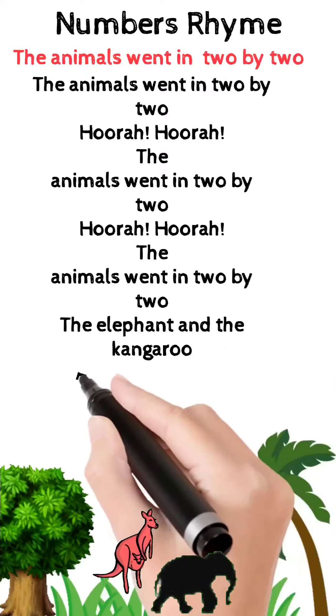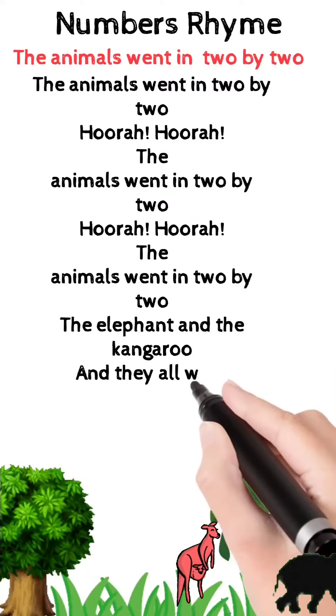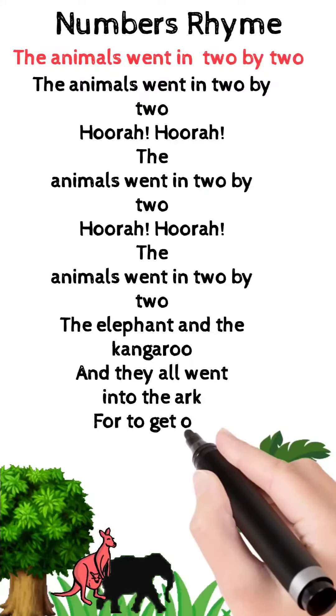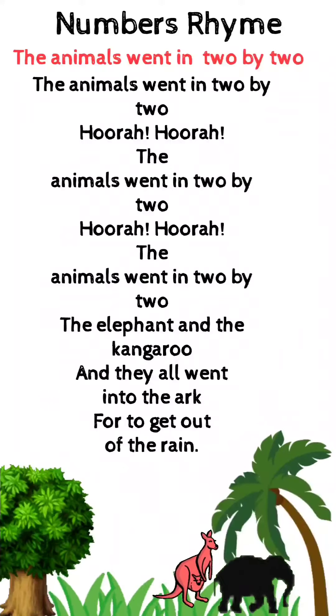The animals went in two by two. The elephant and the kangaroo. And they all went into the ark for to get out of the rain.